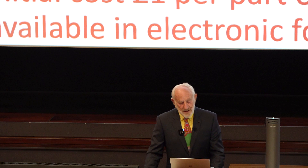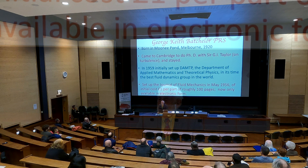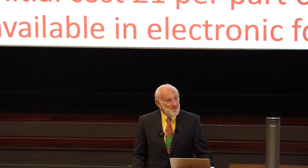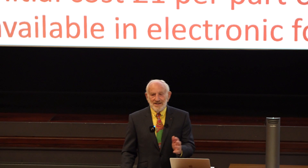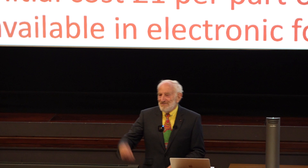One of the things George did was set up the Journal of Fluid Mechanics in May 1956. It cost one pound per part, initially over roughly 100 pages. Now you can't buy it in paper at all - it's only in electronic form. And I must say, having just dealt with that problem this morning, it's much, much more difficult to submit papers electronically than to simply Xerox them and send them in the post.